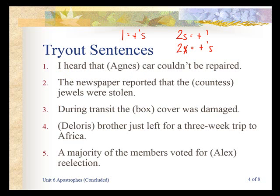'I heard that Agnes's car couldn't be repaired.' Agnes is singular, so to show possession we add an apostrophe s. 'The newspaper reported that the Countess's jewels were stolen.' Countess is singular, so to show possession we add an apostrophe s. 'During transit, the box's cover was damaged.' Box is singular, so to show possession we add an apostrophe s.